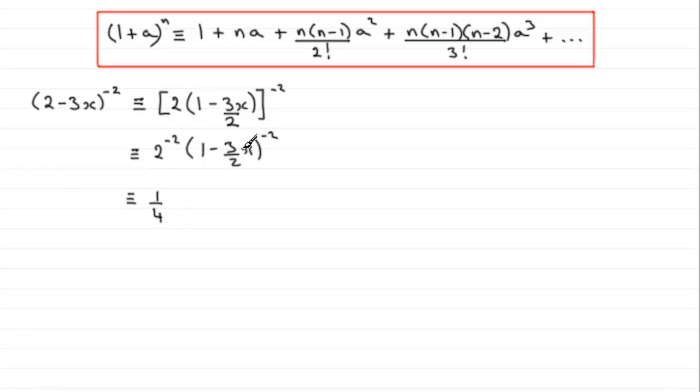And now we're in a position to expand this bracket using the binomial expansion formula. You can see that n is minus 2 and a is minus 3 over 2 times x.